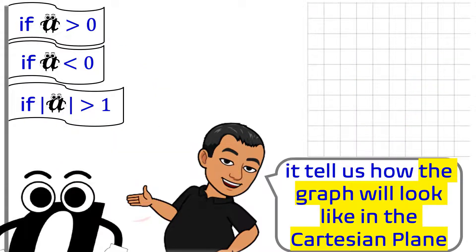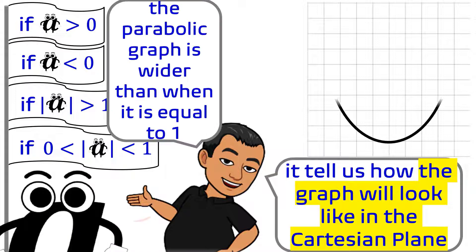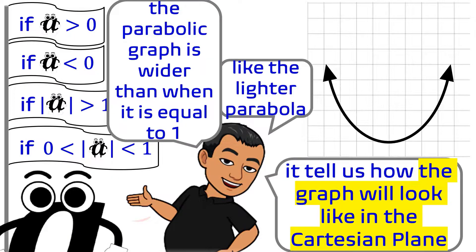And when the absolute value of A is between 0 and 1, the parabolic graph is wider than when it is equal to 1, like the lighter parabola here.